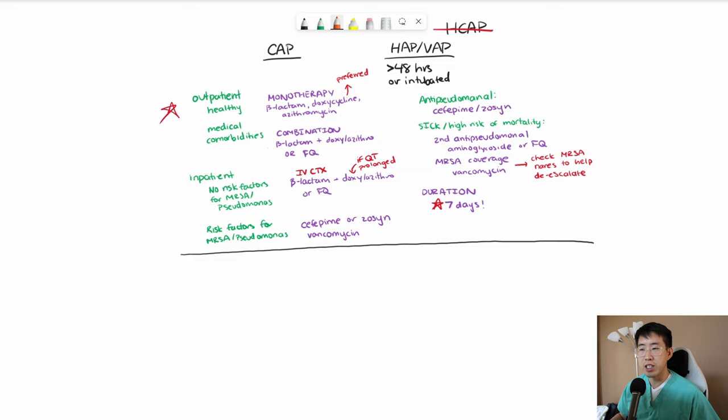One of the most common issues that comes up is, should we be ordering blood cultures or sputum cultures for patients, as well as Legionella and strep pneumo urine antigens? Based on the 2019 IDSA guidelines, these are only recommended if you have severe community-acquired pneumonia. And severe, we're talking about needing to go to the ICU, a really elevated respiratory rate, shock, things like that.